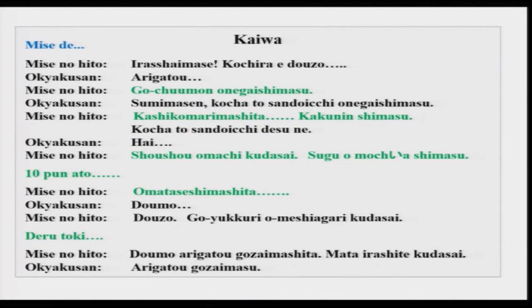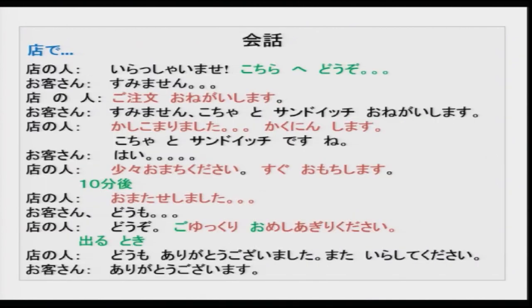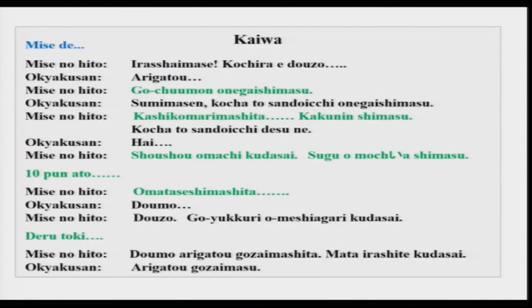Dozo go yukkuri o meshiagari kudasai. Deru toki — domo arigatou gozaimashita, mata irashite kudasai, arigatou gozaimasu. So this is in the script — you can read it now; most of it is in hiragana, there are some katakana characters also over here, so you can read those and practice. This will help you for your JLPT N5. From here you can see that this is a situation where there are a lot of expressions used typically in a restaurant.